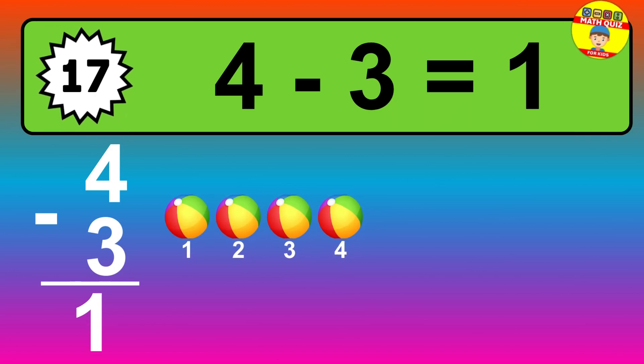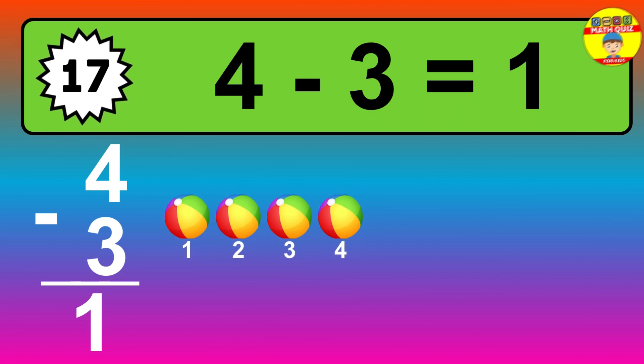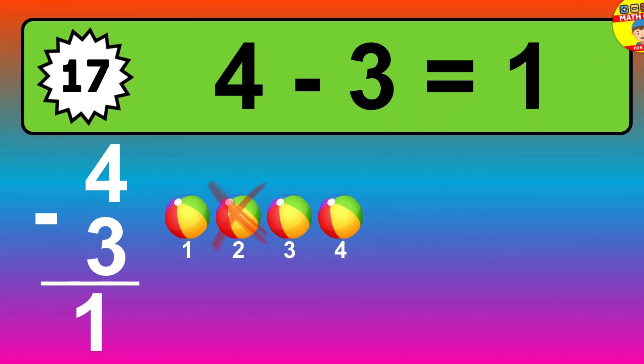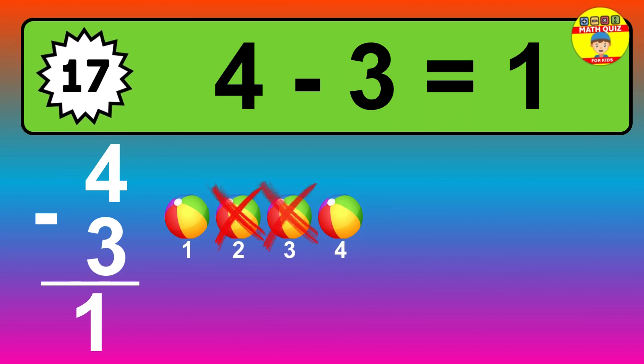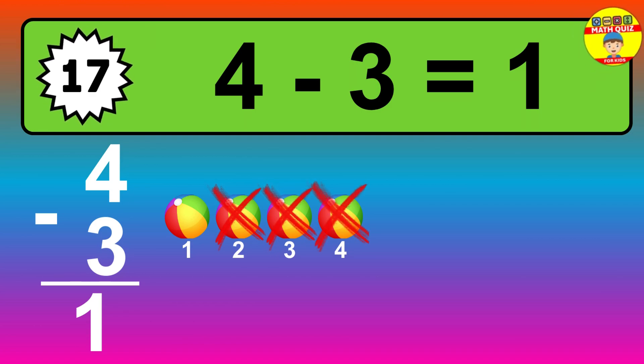Question seventeen: four minus three equals what? So the answer is four minus three is one. Let's count it: one.